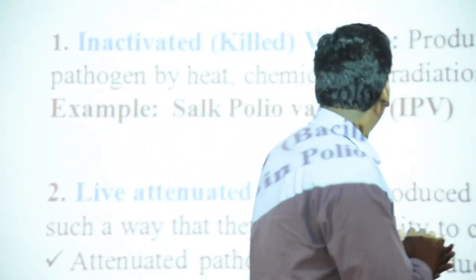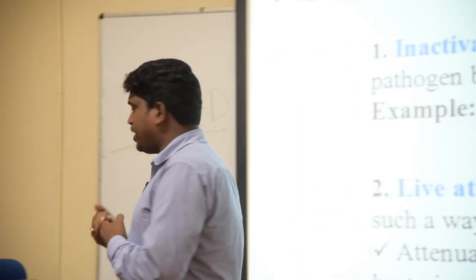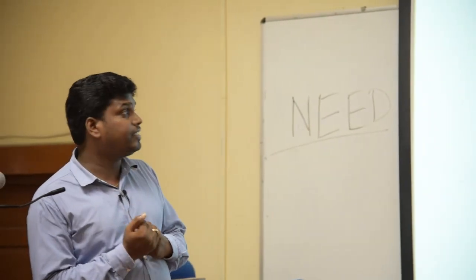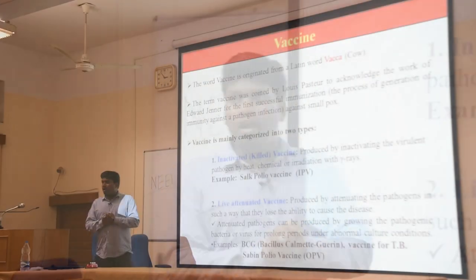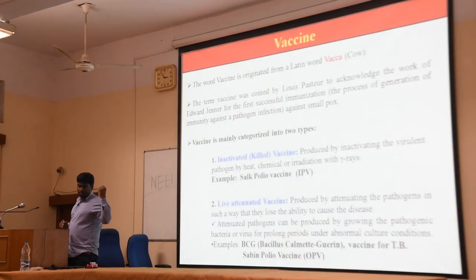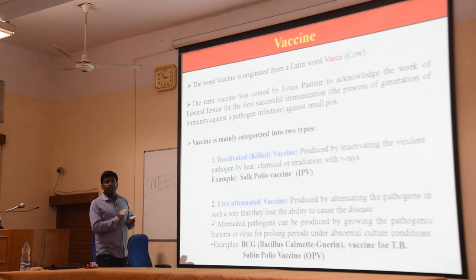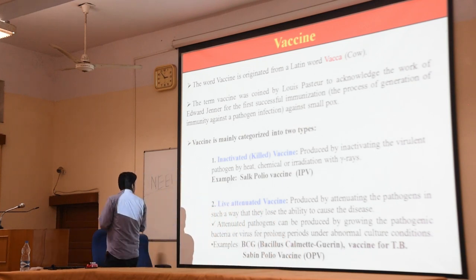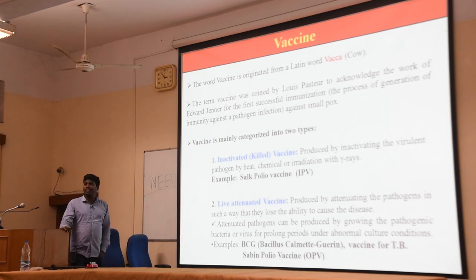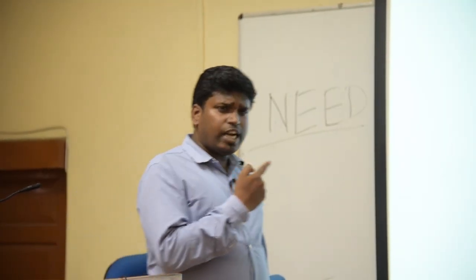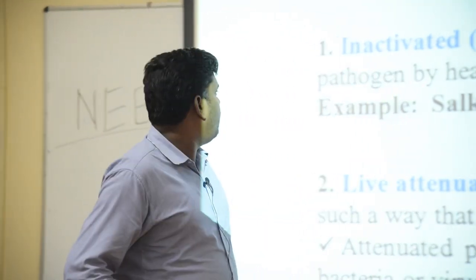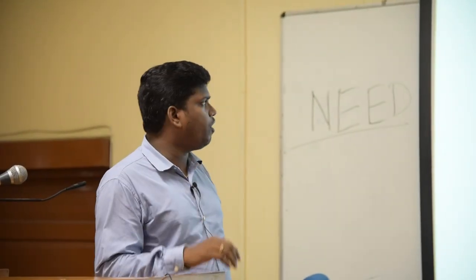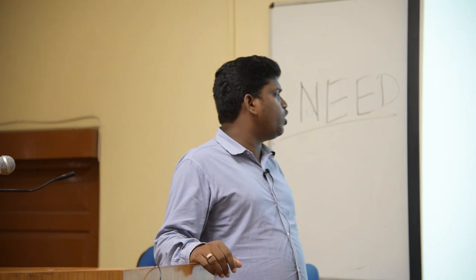Vaccine is broadly categorized into two different types. One is the inactivated or killed vaccine, which is basically produced by treating the virulent pathogens either by heat, chemical, or radiation like gamma rays. An example is the Salk polio vaccine, also popularly known as the inactivated polio vaccine, which was first discovered by Jonas Salk — and on his name, this vaccine is called the Salk vaccine.